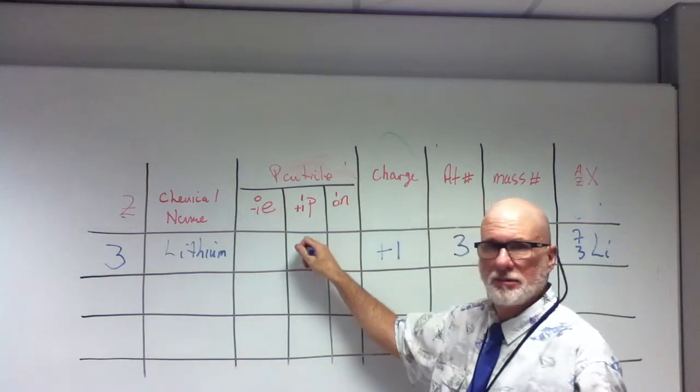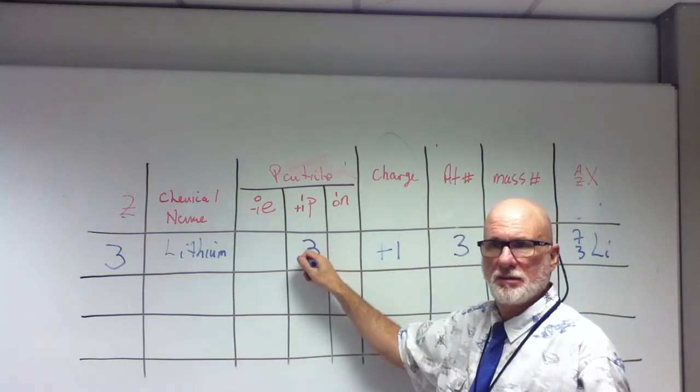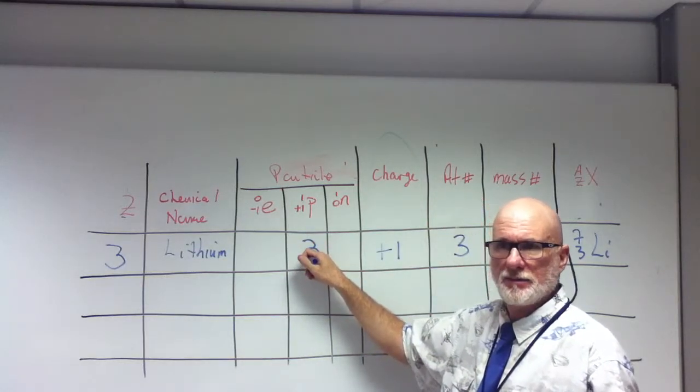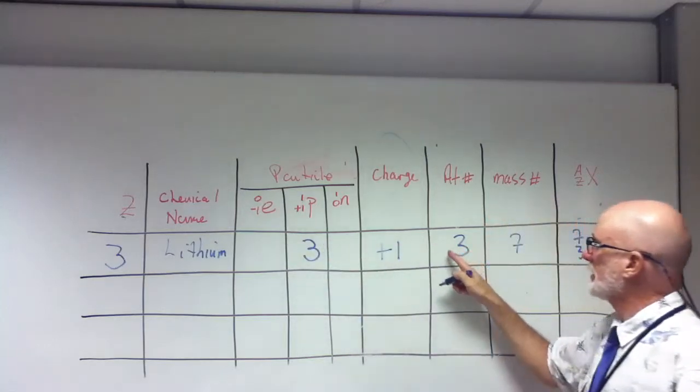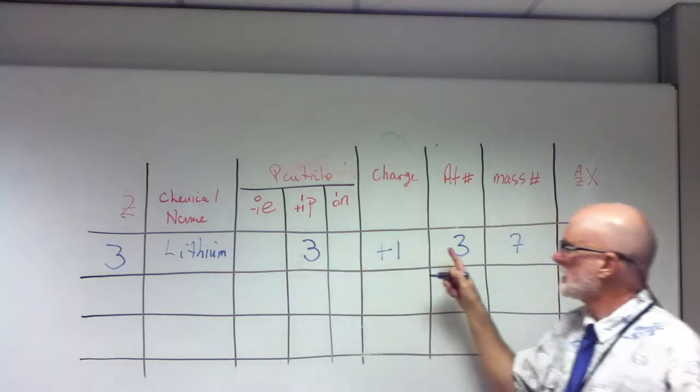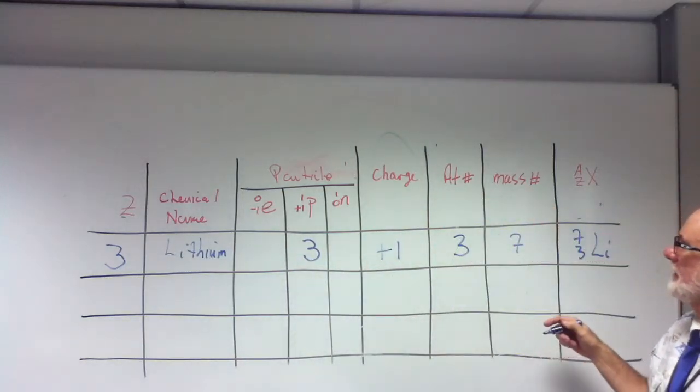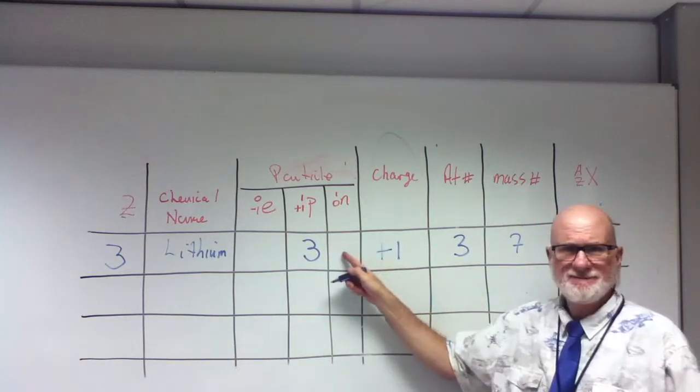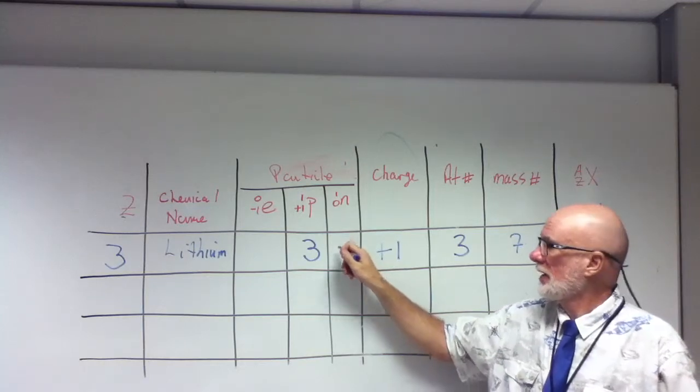Protons? Three. Three, right? Same as the atomic number. See the pattern? Z, number of protons, atomic number. Yeah. All right. Number of neutrons? Four. Four, right, good.